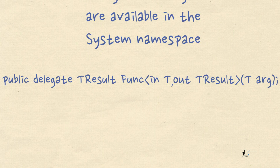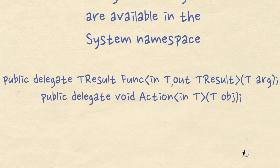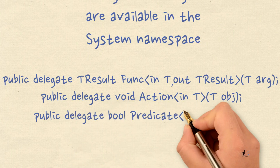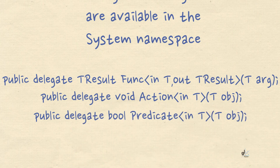The Action generic delegates allow a developer to encapsulate a method that can have 0 to 16 parameters and must not return a value. The Predicate generic delegate encapsulates a method that contains one parameter and returns a Boolean value. A predicate delegate represents a method that defines a set of criteria and determines whether the specified object meets those criteria. Let's look at code examples using each of the built-in generic delegates — Func, Action, and Predicate — including an example using an extension method that takes a predicate as an argument.